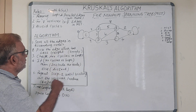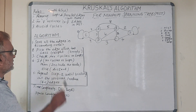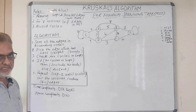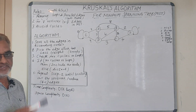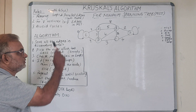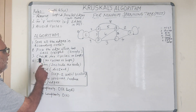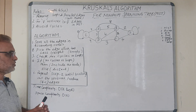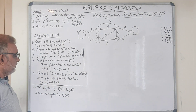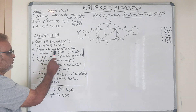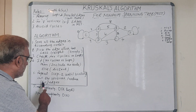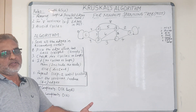Kruskal's algorithm first sorts all edges in ascending order of weight, then picks the edge with the minimum weight — that is step two. Kruskal's algorithm is a greedy algorithm. Check for cycles or loops; if there are no cycles, include that edge, otherwise discard it. Finally, repeat step two until all vertices are visited, producing a spanning tree with v minus 1 edges.